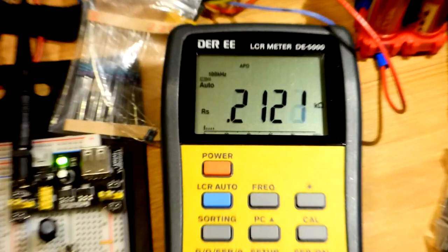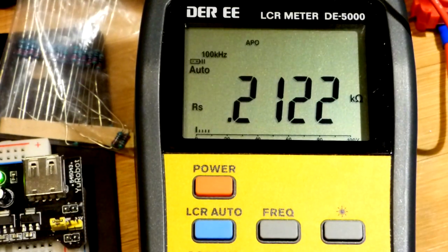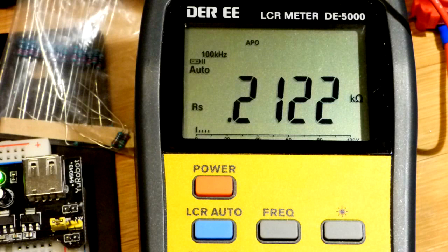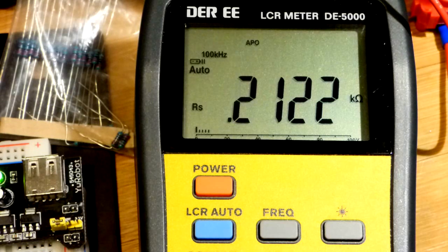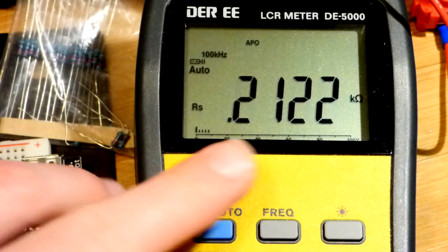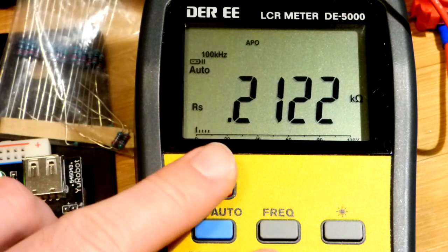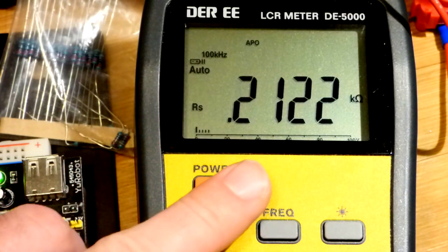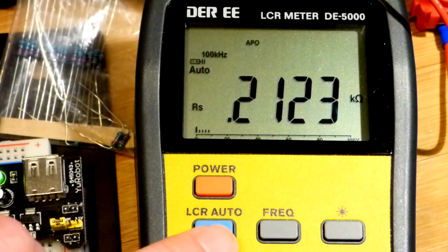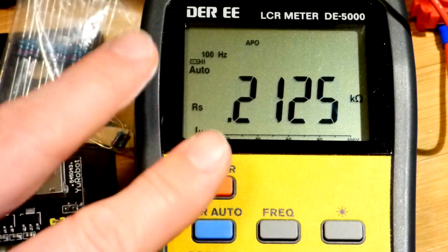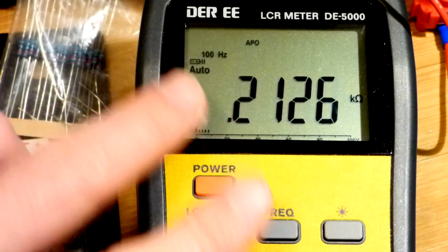These are cheap resistors supposed to be 1% tolerance—higher, lower, or exactly on value. This resistor is not 1% accurate. We're getting basically 212 ohms at 100 kilohertz. Let's change the frequency to 100 hertz, the other end of the spectrum for this meter.